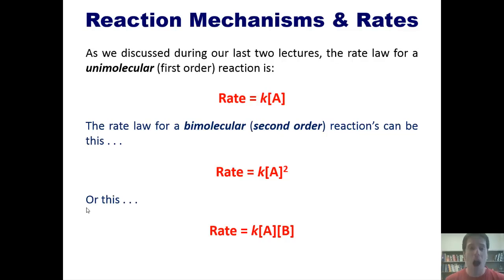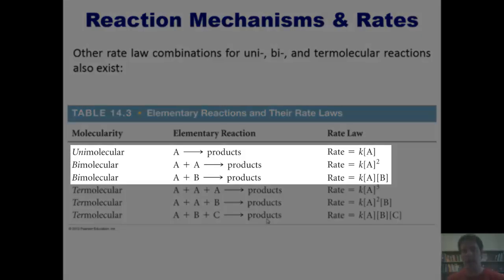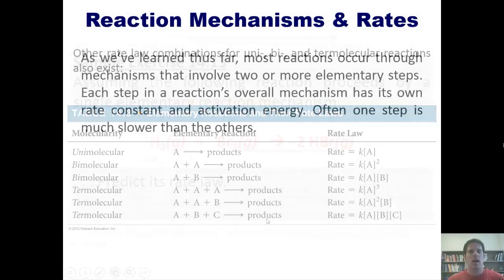Now, believe it or not, other combinations of rate laws exist for uni-, bi-, and termolecular reactions. This table shows a few examples of those, and you can see, they can get pretty complex. You're welcome to pause the video here and look at these more closely. To students who take this class from me, I want to reemphasize that I will not have you derive any of these more advanced rate laws, but will instead only focus on unimolecular and simple bimolecular rate laws on our exams.